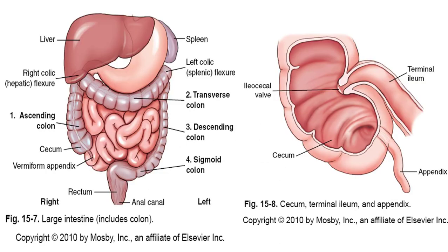The large intestine is approximately 5 feet long and begins at the junction of the small intestine and ends at the anus. It forms an arch around the loops of the small intestine and consists of four main parts: the cecum, the colon, the rectum, and the anal canal. The colon itself has four portions,